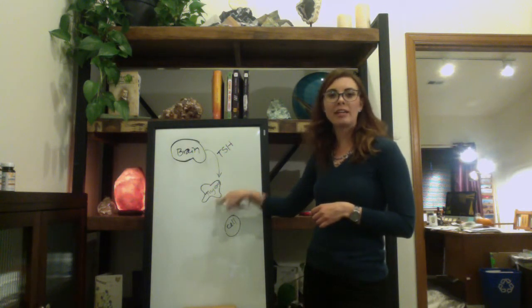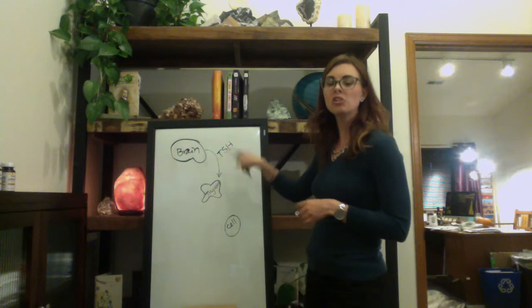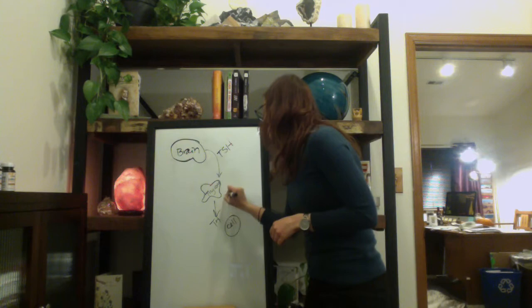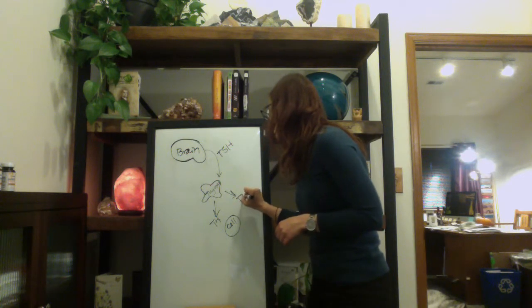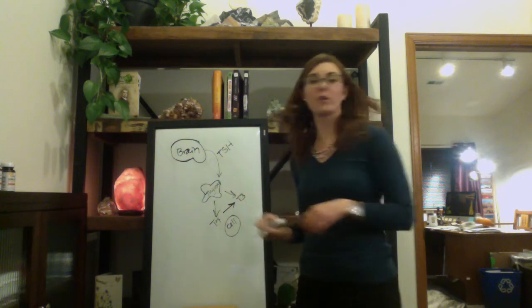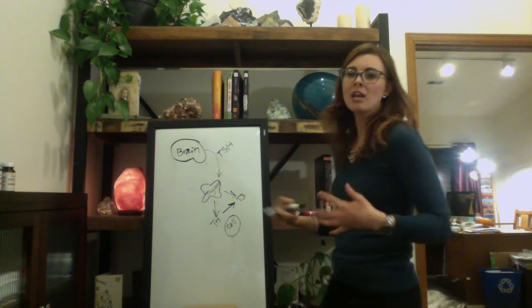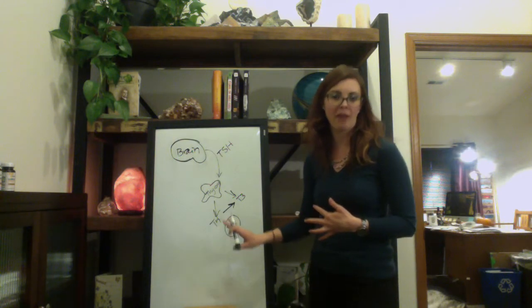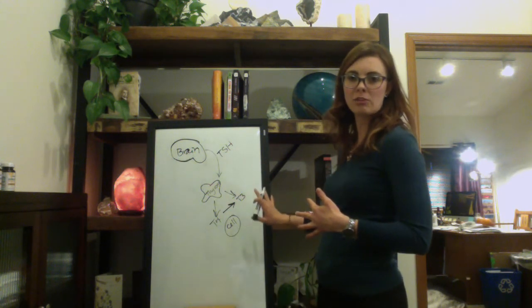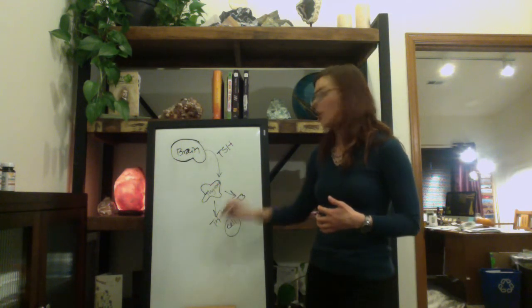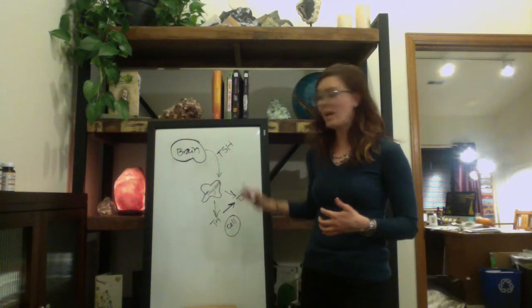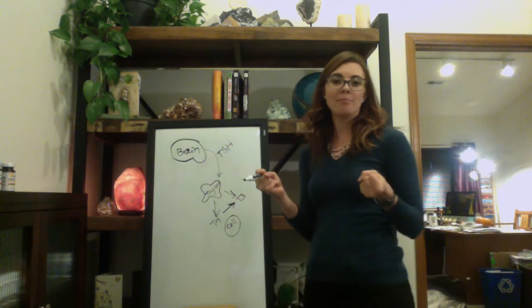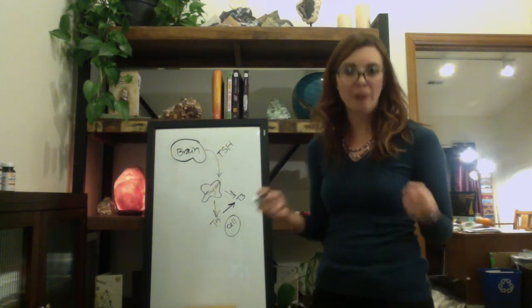Your thyroid then, in response to this message, makes a hormone called T4. It also makes T3. Now, T4 is really converted to T3 in the body, but just for ease of explanation, let's just say we have these two hormones that come out from the thyroid. T4 and T3. These are the coal that fuels your furnace. And these go to the cells, and the cells pick that up and basically get their energy from it.